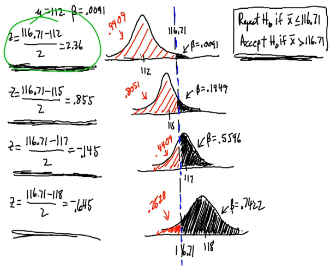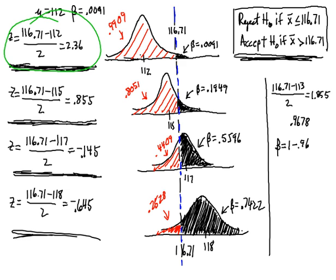Let's calculate for 113. What is the probability of accepting the null hypothesis if the population average is as bad as 113? I get a Z value of 1.855 which I'd round to 1.86, with a 0.9678 table value. So beta would be about 0.0322, about 3%.